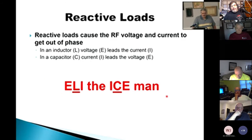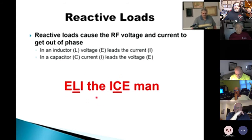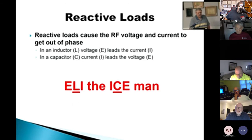Here's an easy way to remember whether it's capacitive or inductive reactance: ELI the ICE man. In an inductor L, voltage E comes before current I. In a capacitor C, the current I comes before voltage E. If you just remember ELI the ICE man — that's been on ham radio tests in some form since the beginning.